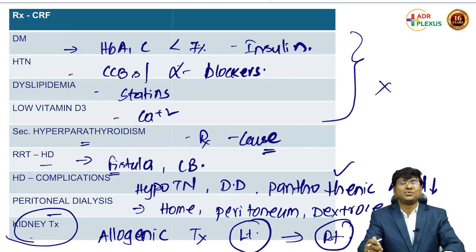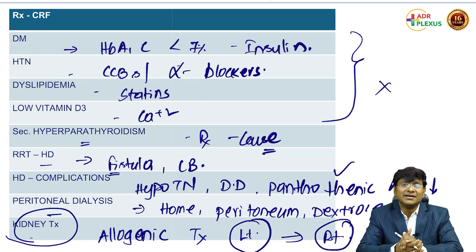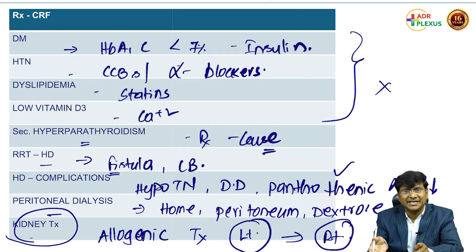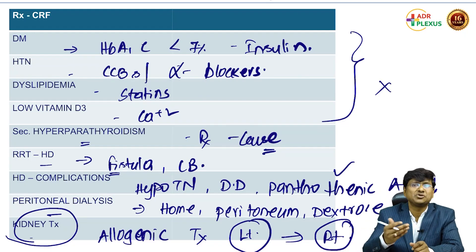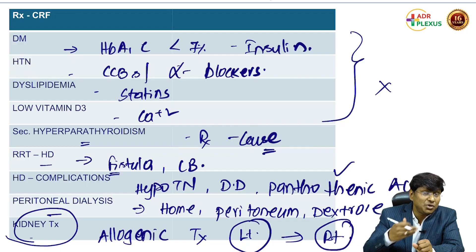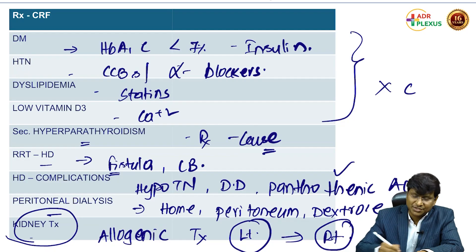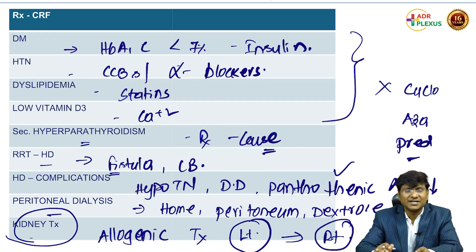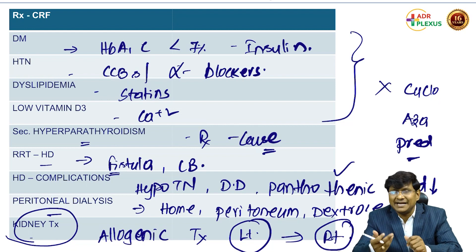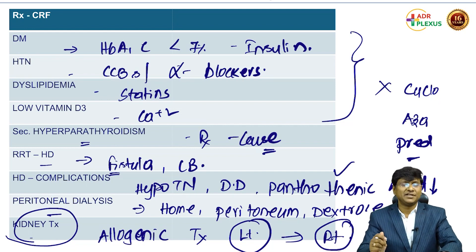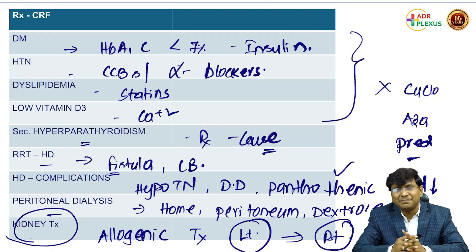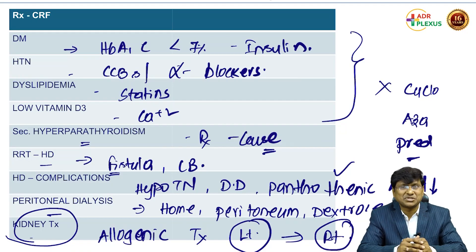To suppress hypersensitivity reactions after kidney placement, give cyclosporine, azathioprine, and prednisolone. These suppress immunity, putting the individual at increased risk of opportunistic infections. This is the treatment and workup in patients with chronic renal failure.